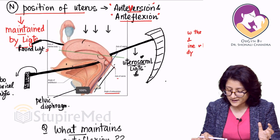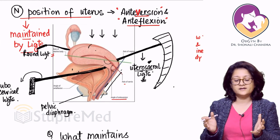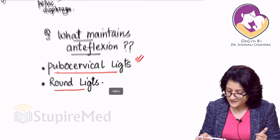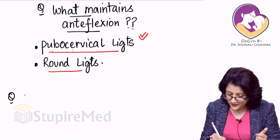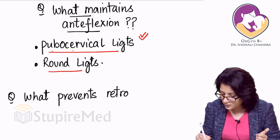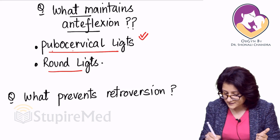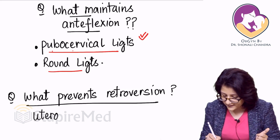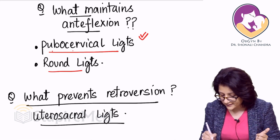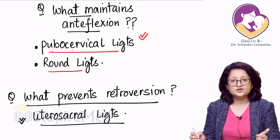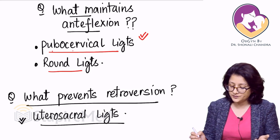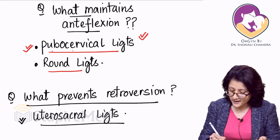This is how these various ligaments maintain the normal position of the uterus. Another question asked in PG exams: what prevents retroversion? The answer is the uterosacral ligaments. So the ligaments discussed so far are pubocervical and uterosacral.